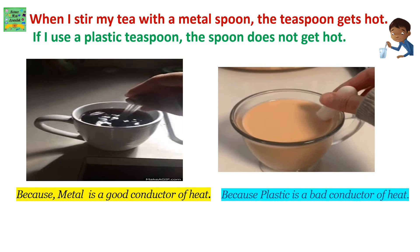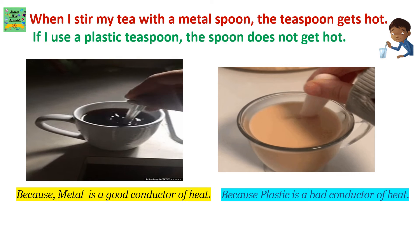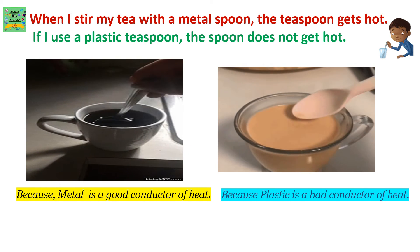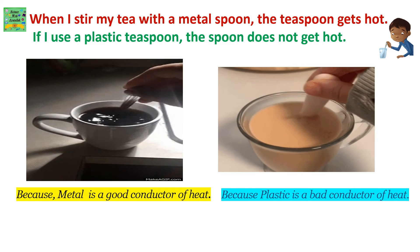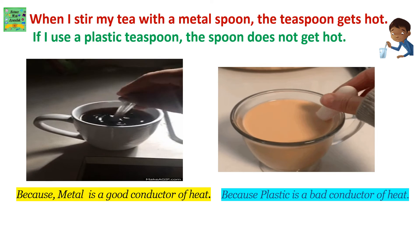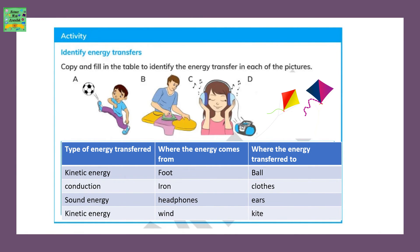When I stir my tea with a metal spoon, the teaspoon gets hot. If I use a plastic teaspoon, the spoon does not get hot. Because metal is a good conductor of heat and plastic is a bad conductor of heat.